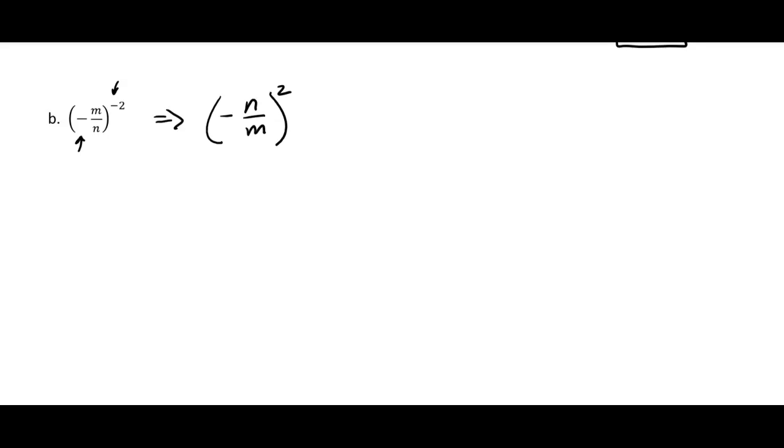squared. Now that's going to mean negative n over m times negative n over m, which is going to be—a negative times negative is positive—so n times n is n squared over m squared. And then that would be the answer there.